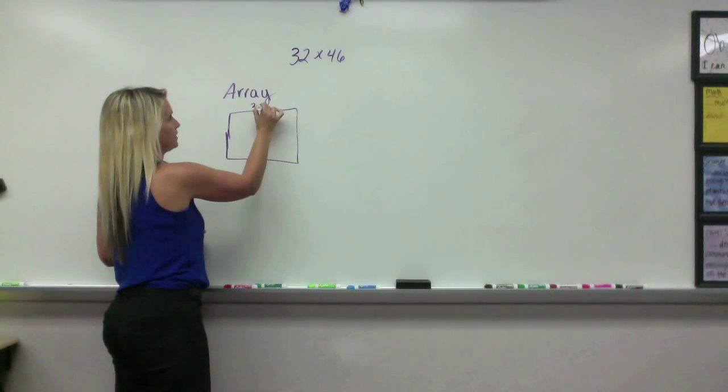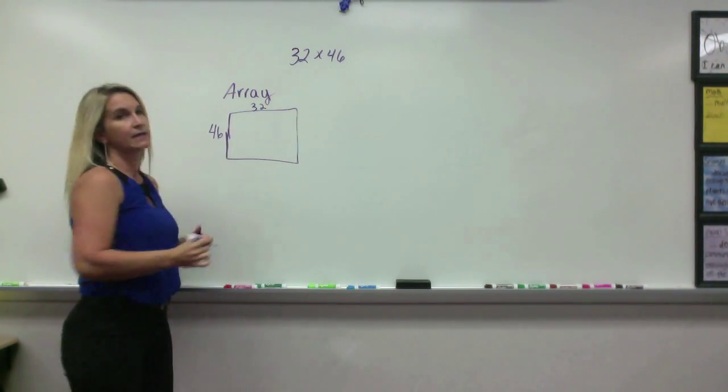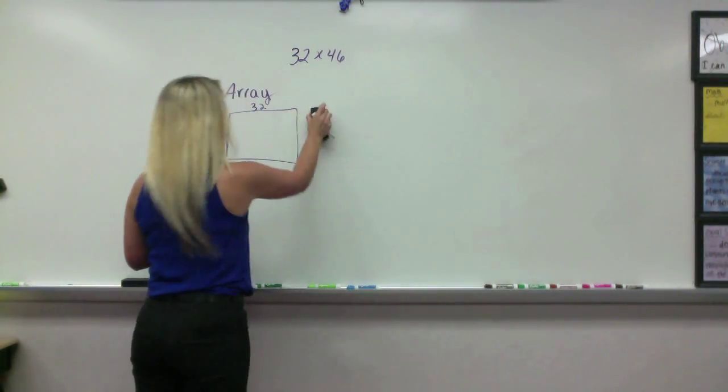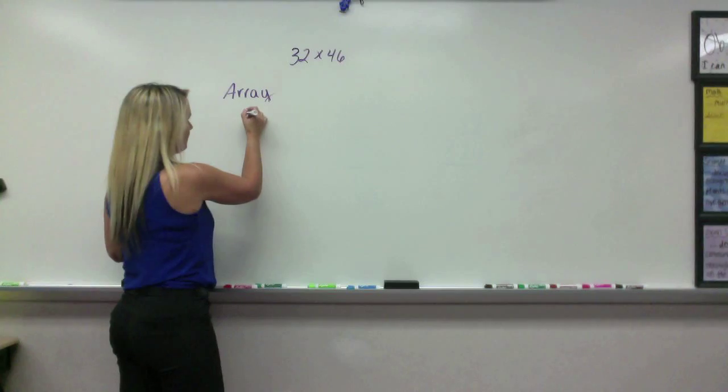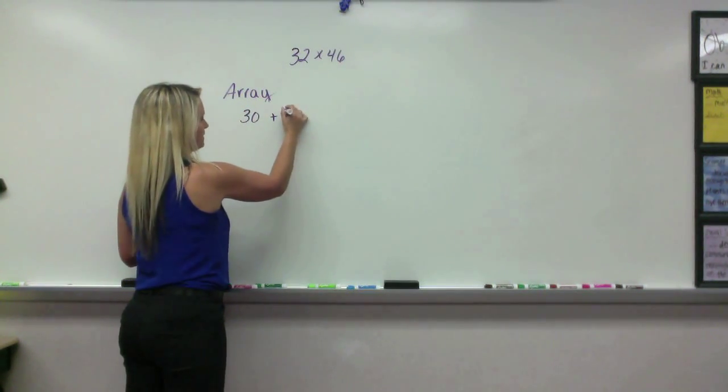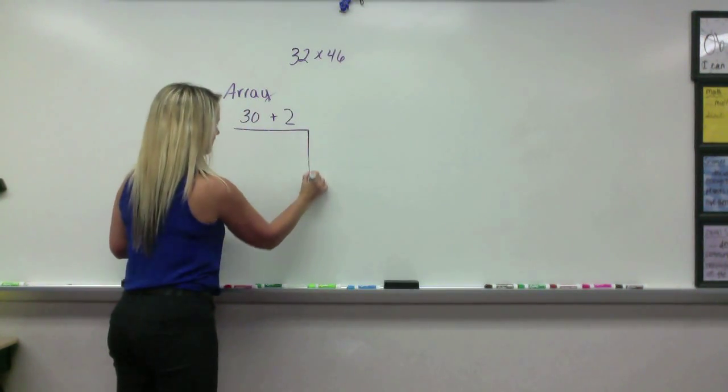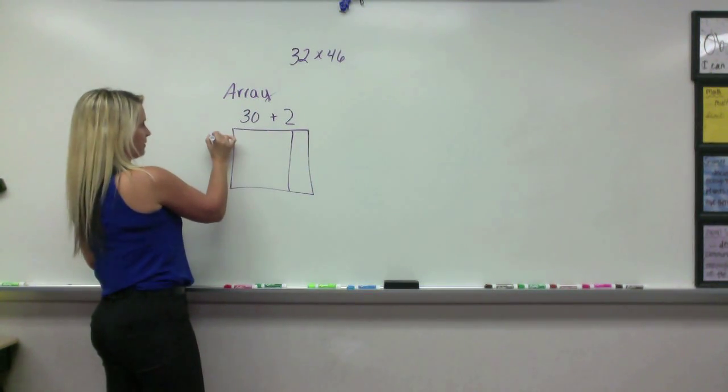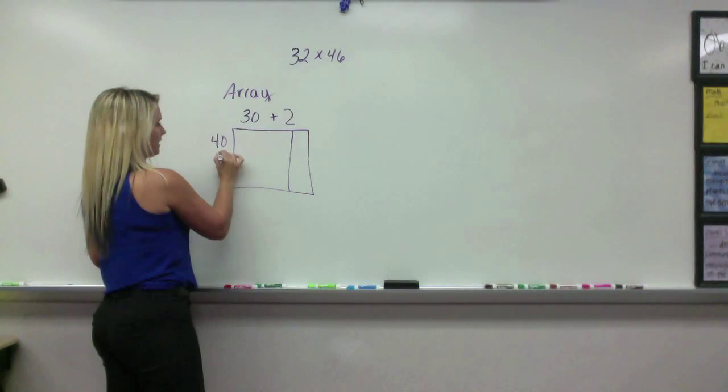Now, typically we would do 32 times 46, but we don't know how to do that in our head. So we're going to make 30 plus 2 be this side, and we can make that 2. And this side will be 40 plus 6.